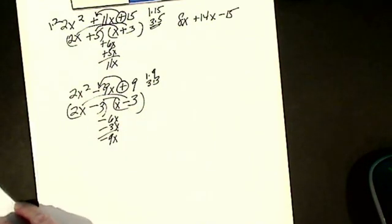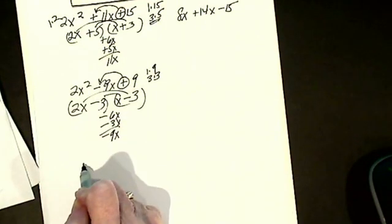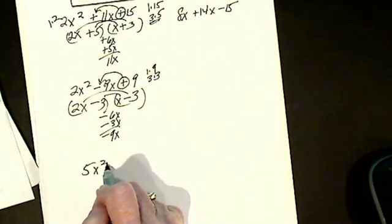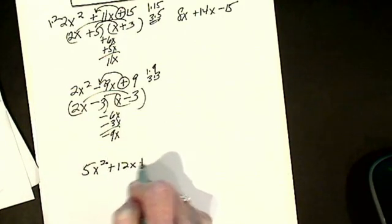Alright, let's try one that maybe is not so fine. Alright, let's check this one. 5x squared plus 12x plus 4.